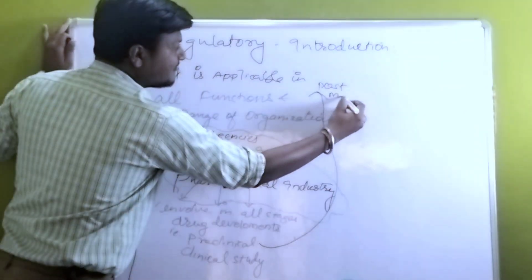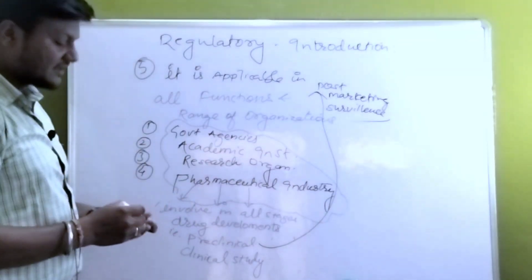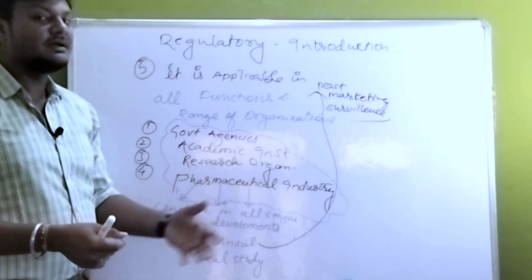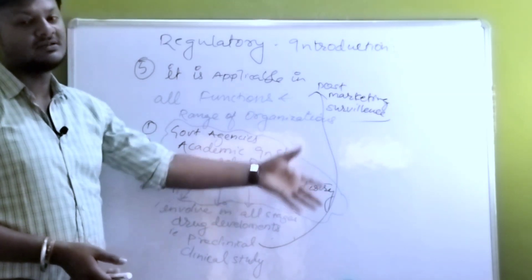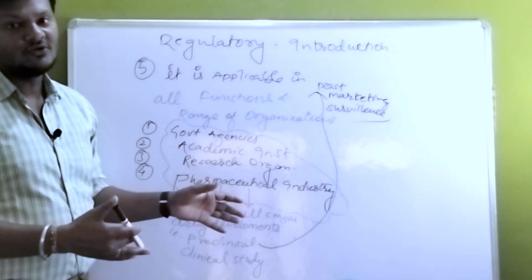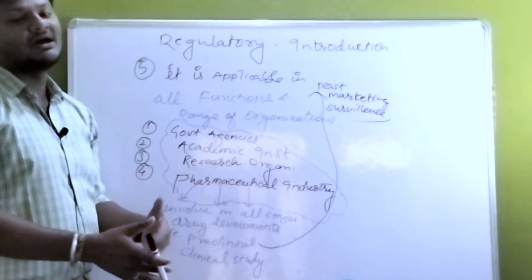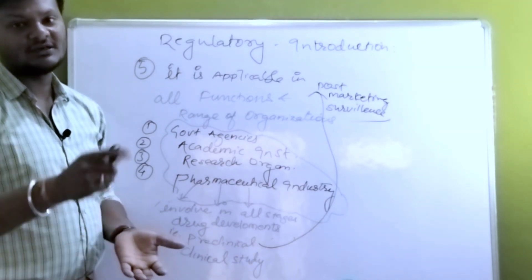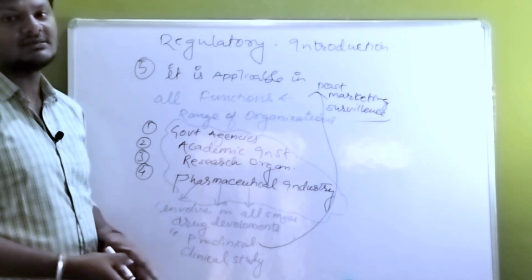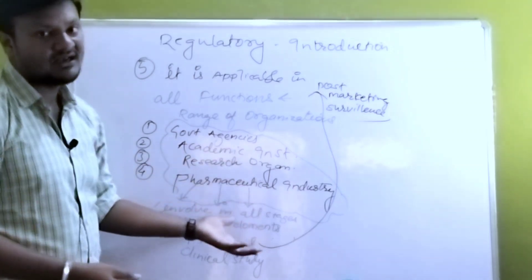After that, regulatory includes post-marketing surveillance. When the drug comes to the market, patients, consumers, or distributors provide feedback — feedback about the quality, safety, and effectiveness of the drug. Post-marketing surveillance keeps the drug under regulatory oversight in the market. Regulatory guidance includes recommendations for these functions as well, monitoring the drug's effectiveness, safety, and quality in real-world conditions.